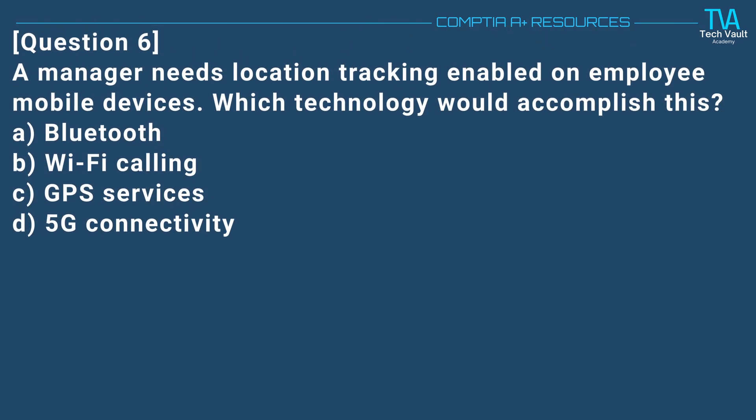Question 6. A manager needs location tracking enabled on employee mobile devices. Which technology would accomplish this? A. Bluetooth. B. Wi-Fi calling. C. GPS services. D. 5G connectivity.